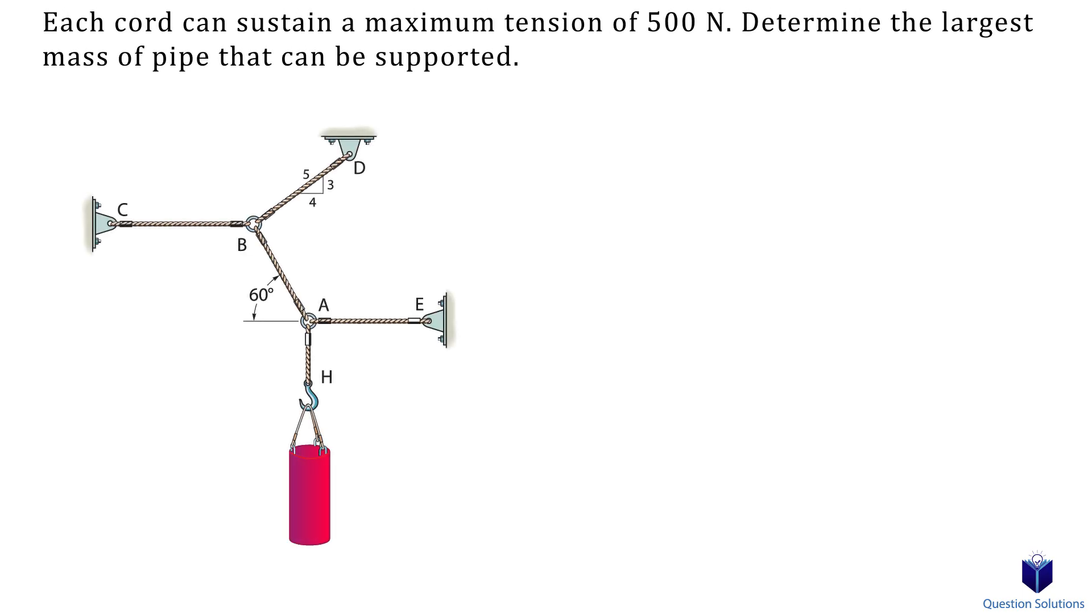Let's take a look at this problem, where we have multiple points to consider. In this question, we are told that each cable can support a maximum tension of 500 newtons and we need to find the largest mass of the pipe that can be supported. So straight away, we know that the tension of chord HA would be equal to the weight of the pipe. Now leaving that to the side, we can look at point A and draw a free body diagram. We have the force of cable HA downwards, force of cable AE to the right, and we have the x and y components of force BA. So let's write our equations of equilibrium.